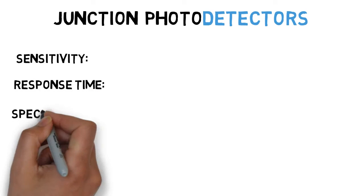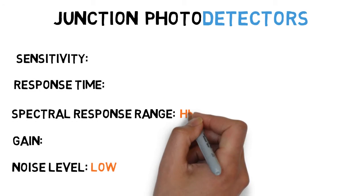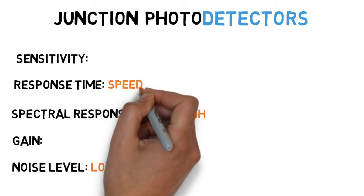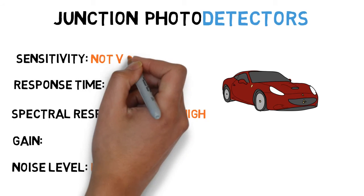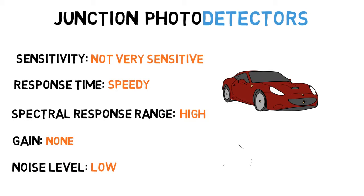Finally, there are junction photodetectors. These are characterized by their very high spectral response range and speedy response time, generally better than the previous two models. However, they are usually not as sensitive and do not produce any internal gain.